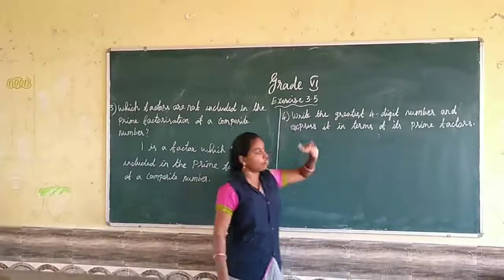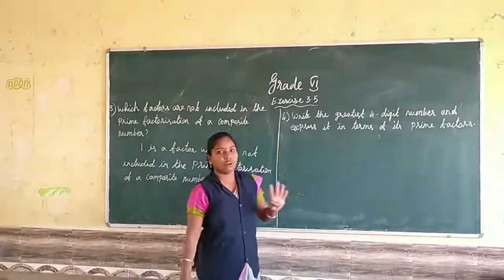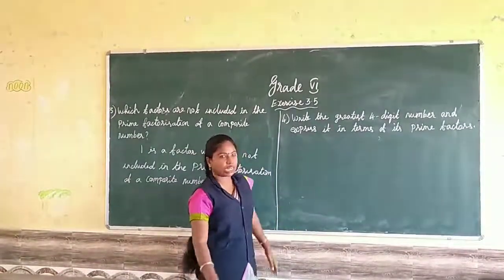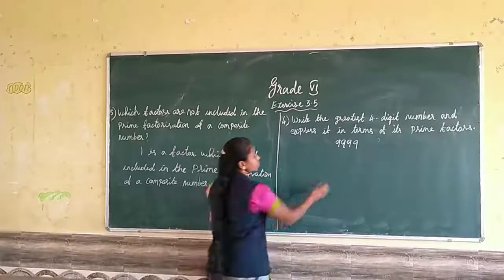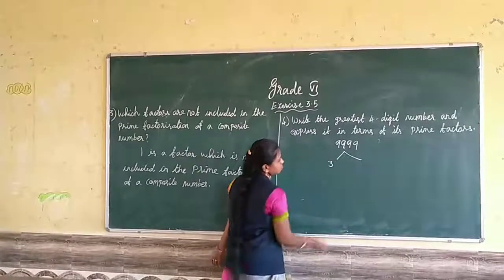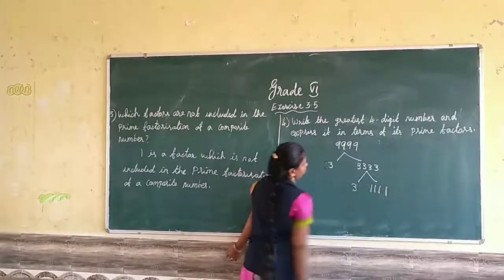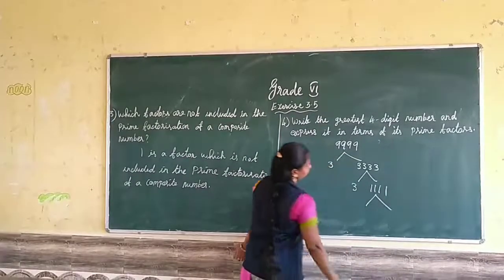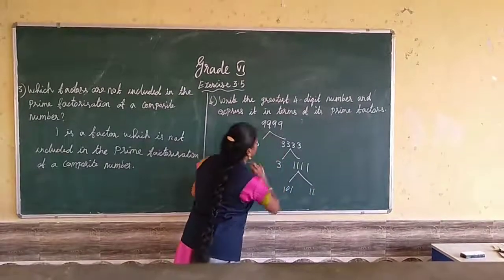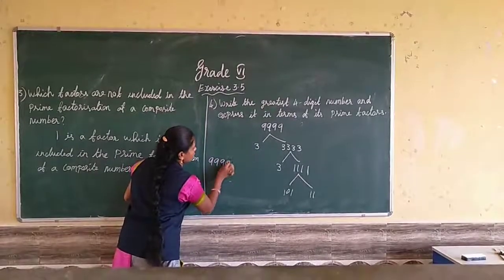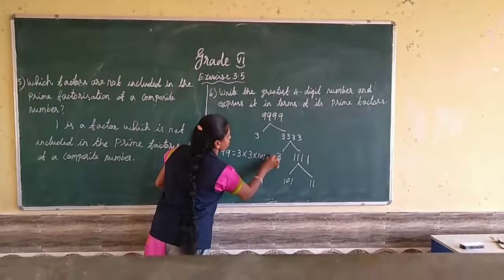Write the greatest four-digit number and express it in terms of its prime factorization. The greatest four-digit number is 9999. We split it as 3 × 3 × 3 × 37, so the prime factorization of 9999 is 3 × 3 × 3 × 37, which can also be written as 3³ × 37.